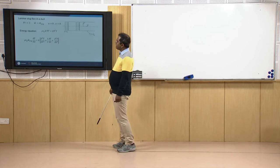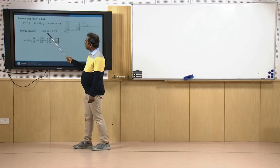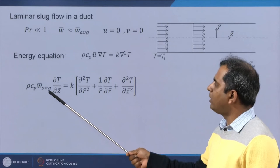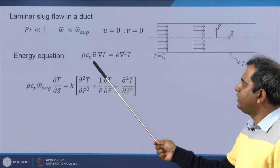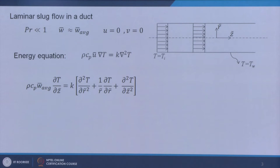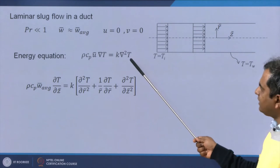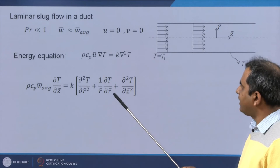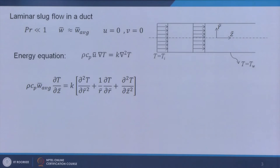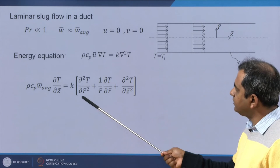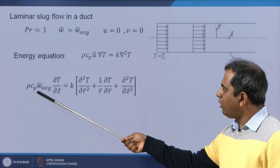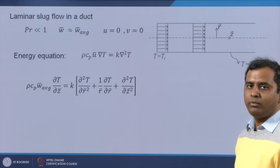For slug flow, U and V equal zero, so two components of del T become zero. Only the axial component remains: rho·C_p·W_average·(∂T/∂Z) on the left. On the right-hand side, all conduction terms are retained since velocity does not multiply them. Azimuthal symmetry is assumed, so the theta component is excluded. The two radial conduction terms and the axial conduction term remain, with rho·C_p on the left and thermal conductivity K on the right.